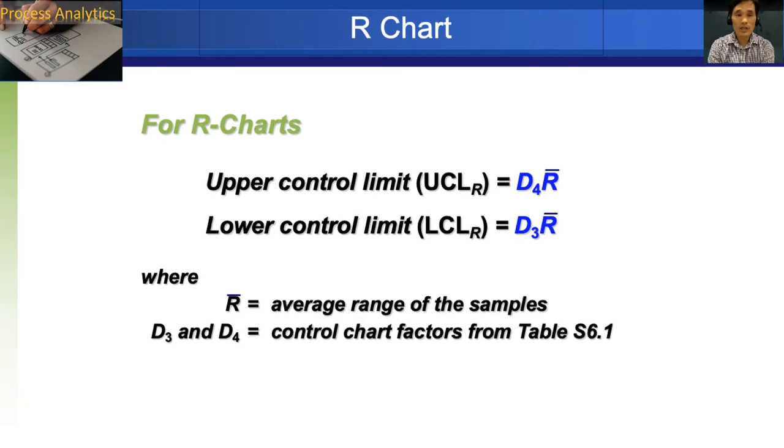R chart can be similarly calculated. The upper control limit is D4 times R bar, lower control limit is D3 times R bar. And R bar which is the mean of ranges serves as the center line.